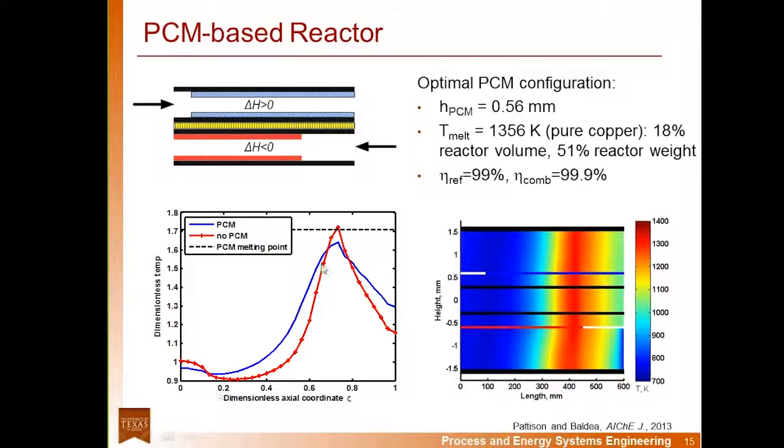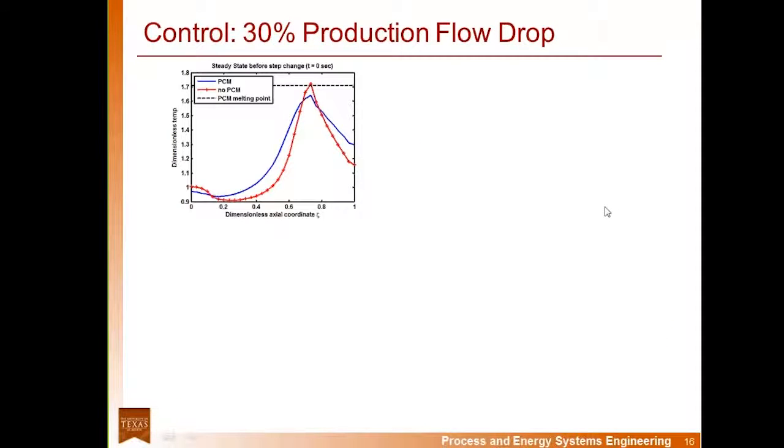The maximum temperature here, so this blue curve shows the temperature profile for the reactor with the PCM, and the red curve shows the temperature profile of the reactor without the PCM. And we see that the maximum temperature is about 100 degrees Celsius less than the base case reactor, and conversion in both channels is slightly higher. So again, because the PCM is highly thermally conductive, we see a better distribution of heat along the reactor length. But more importantly, the transient operation is also improved.